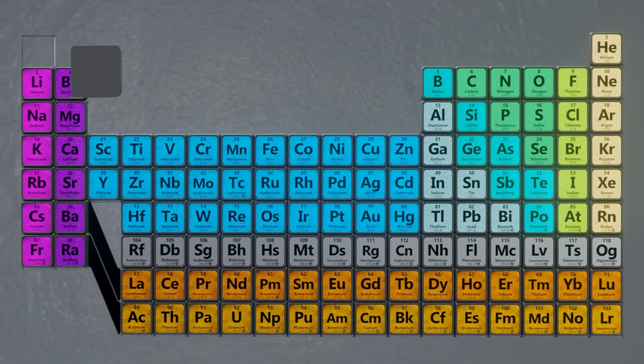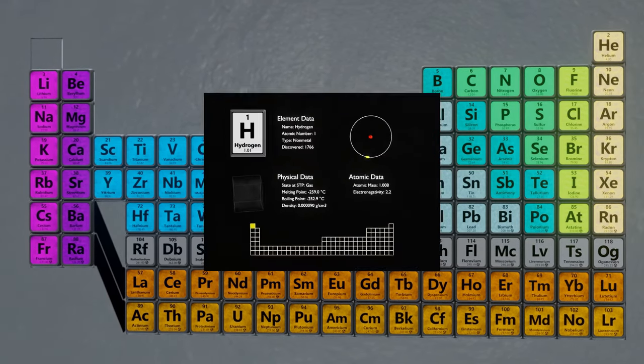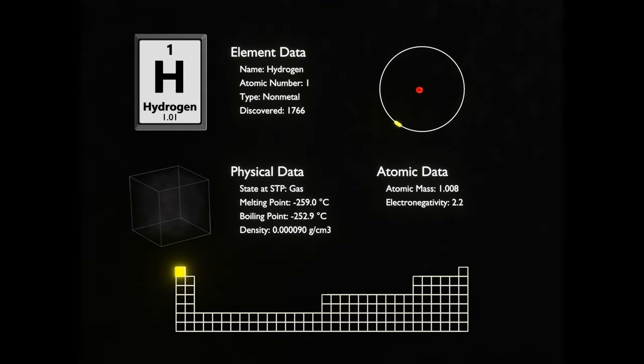Let's start with element number one, hydrogen. Hydrogen is the lightest element, as it's usually only made out of one proton and one electron.